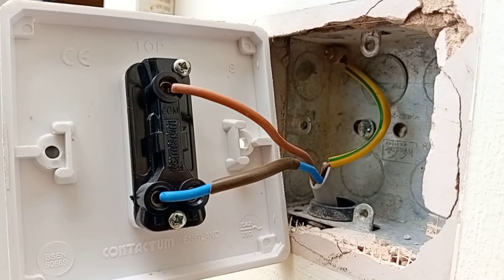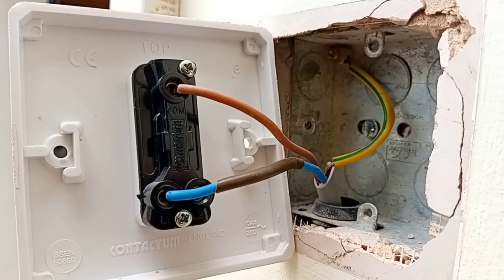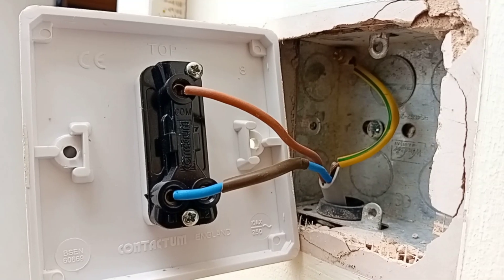That's why they've sheathed the blue wire with brown sheathing to identify it. I'll show you a drawing now to show further details on how to wire a one-way lighting circuit.